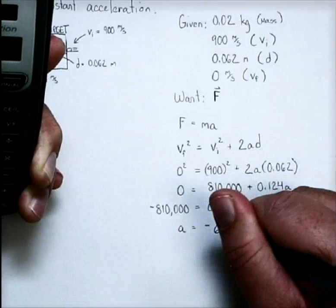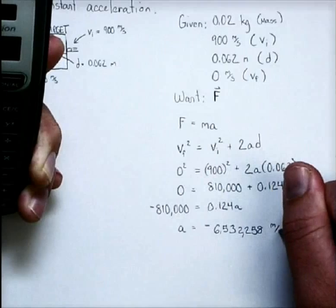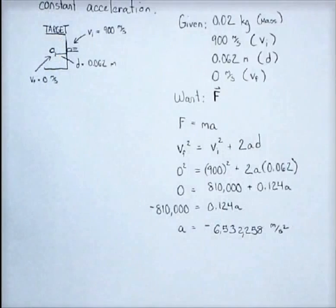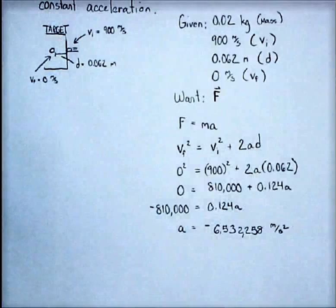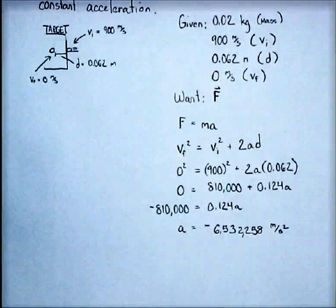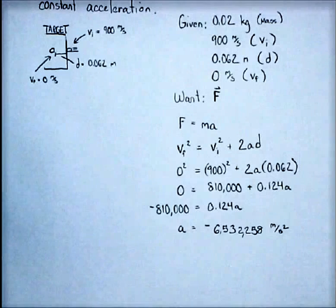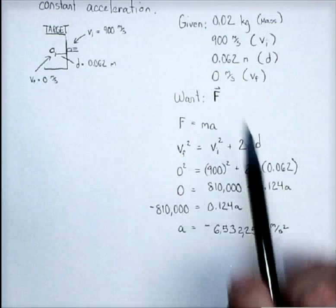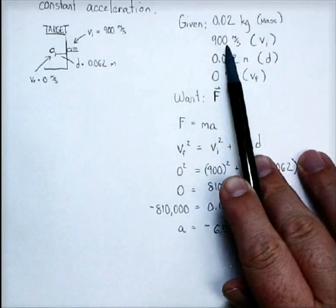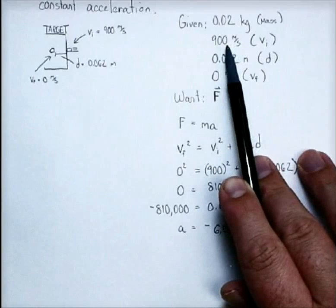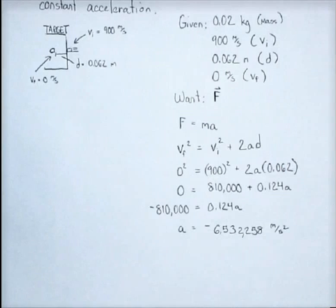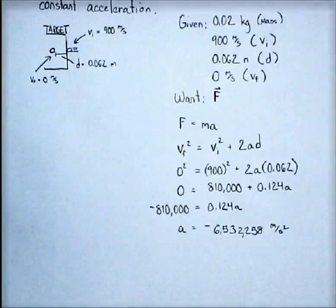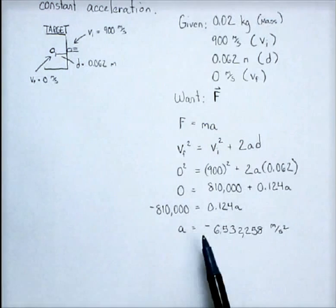This giant number. A huge acceleration. Negative 6,532,000, blah, blah, blah, blah, blah. Now, first, why is that such a large number? Well, it went from going really fast to stopped at a really short distance. That's a huge acceleration, and obviously it did so in a very short time as well. What about this negative?